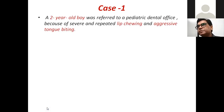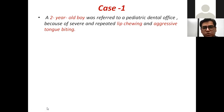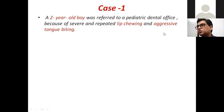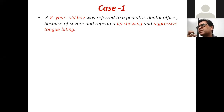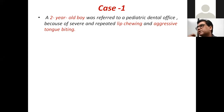Let's start with Case 1. A two-year-old boy was referred to a pediatric dental office, indicating he had some sort of dental problem his parents were trying to figure out. The complaint was a habit of repeated biting and chewing of the lip — he kept biting and chewing his lips.